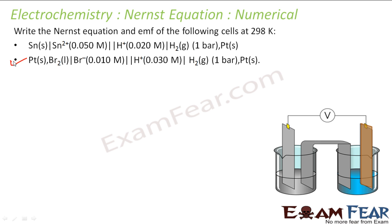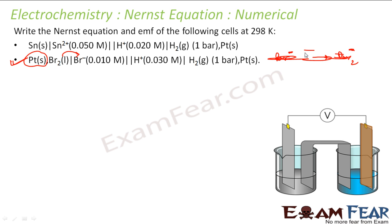Similarly, we can solve the second part. Here, platinum acts as a catalyst. Br⁻ is getting oxidized to Br₂ — that's the oxidation reaction. Then H⁺ is getting reduced to H₂ — that's the reduction reaction. So we have Br⁻ → Br₂ (oxidation) and 2H⁺ → H₂ (reduction), giving two electrons transferred.